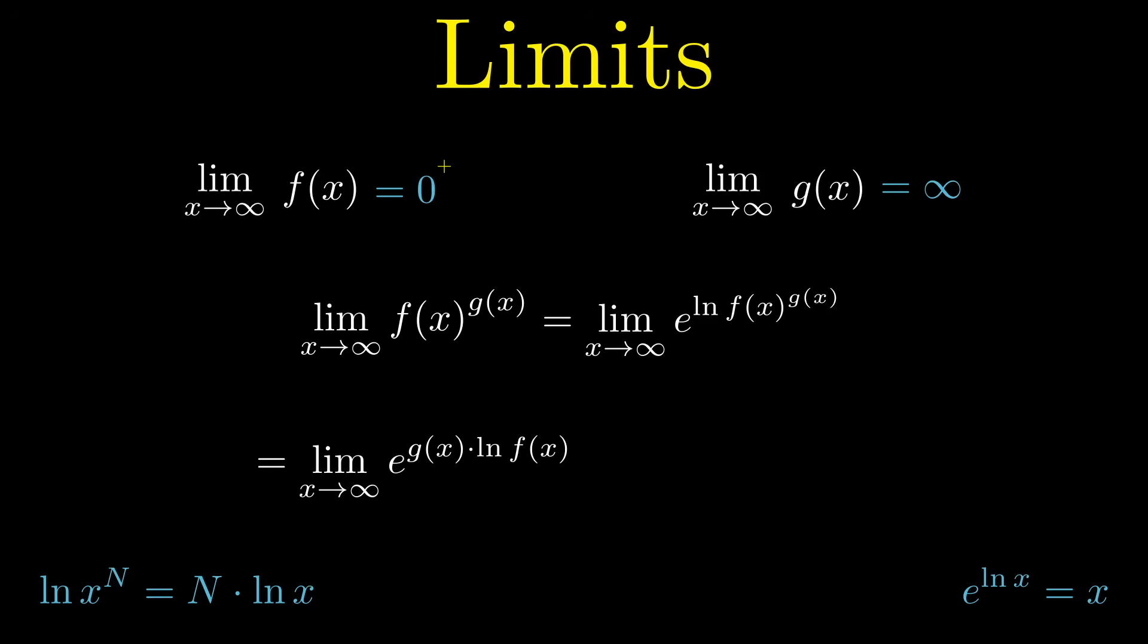g is still approaching infinity, f is still approaching zero from the right, but this time f is inside the natural log function. And the natural log function approaches minus infinity from the right side of zero. So our limit now approaches something like e to the infinity times negative infinity.